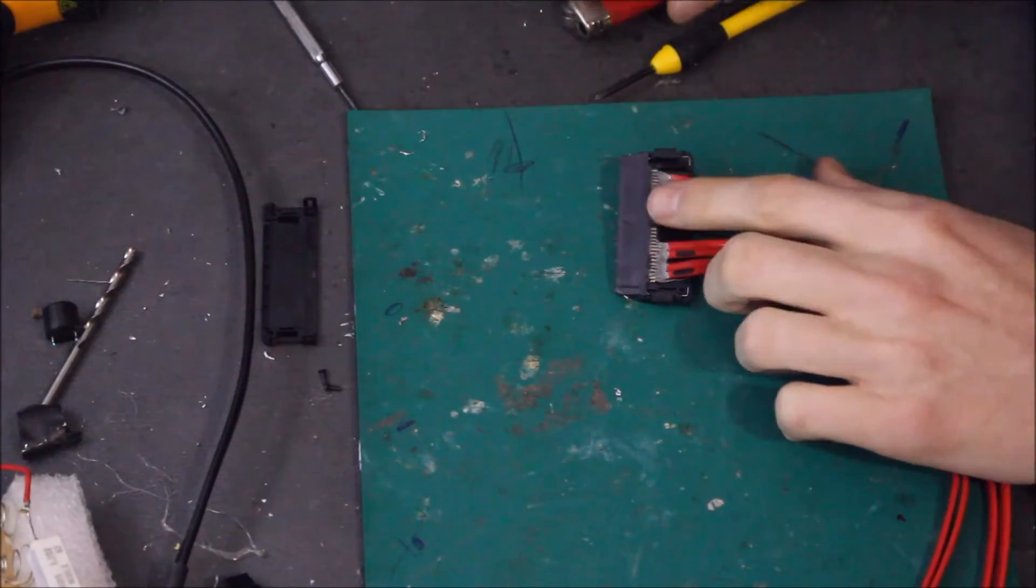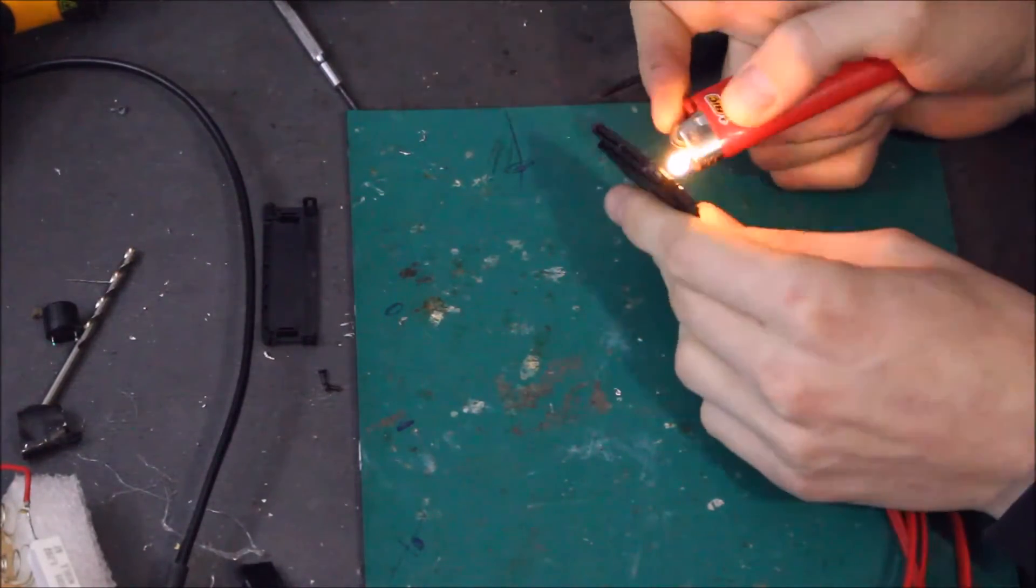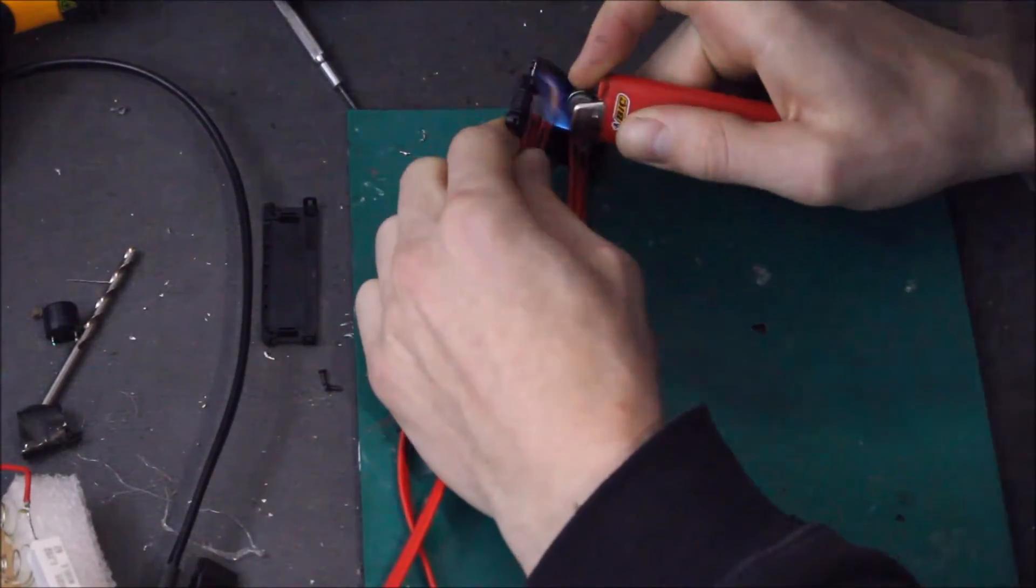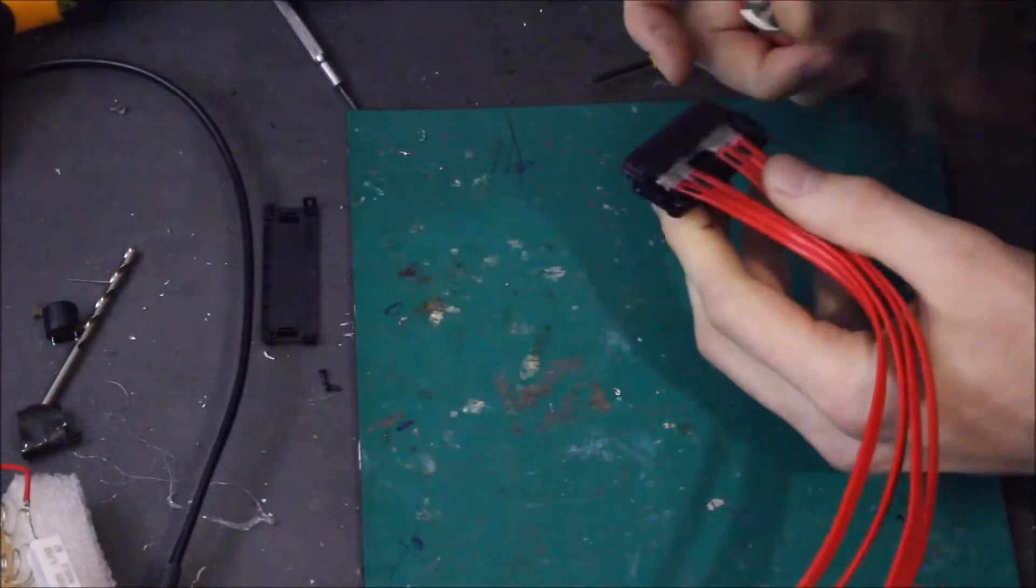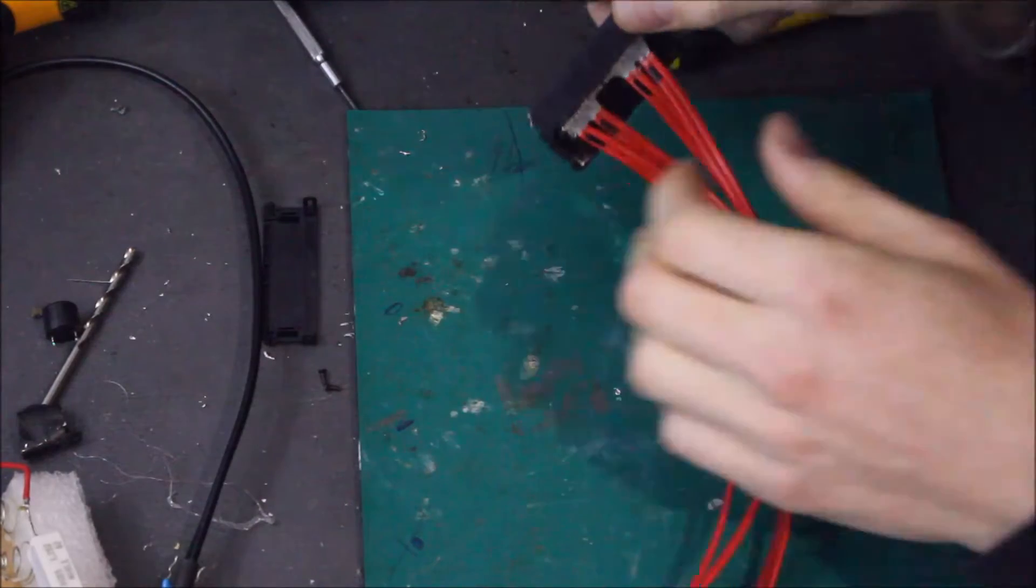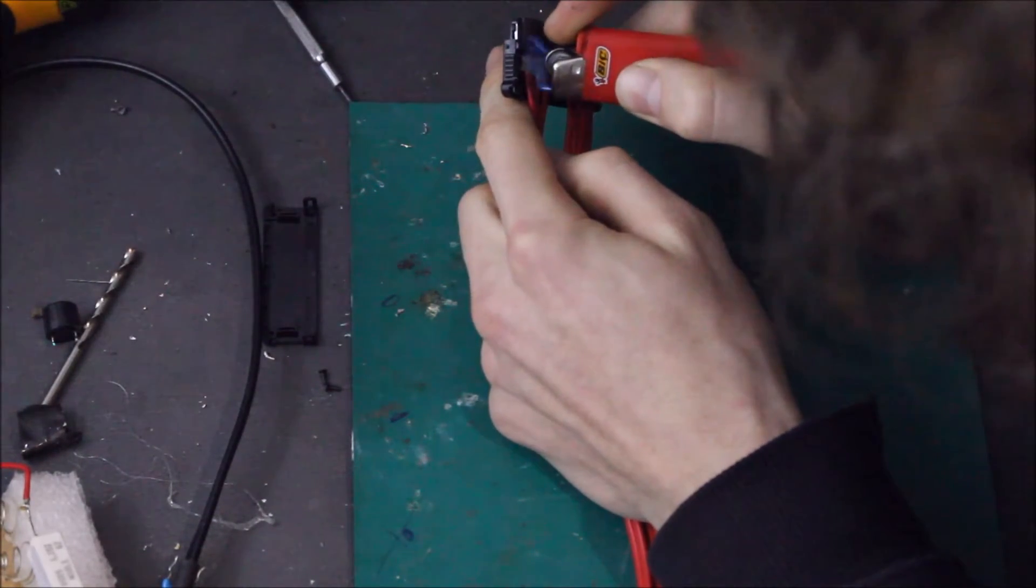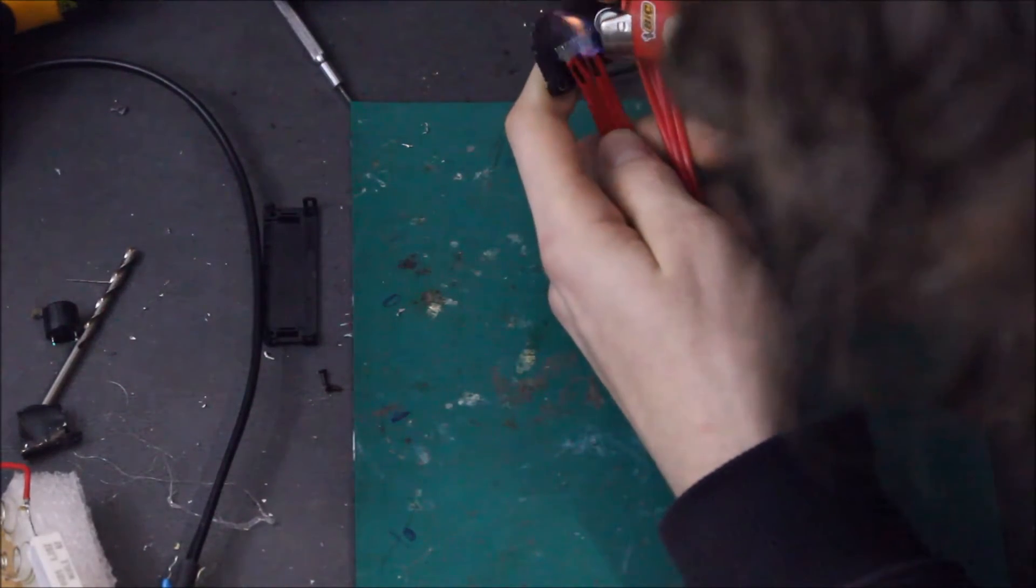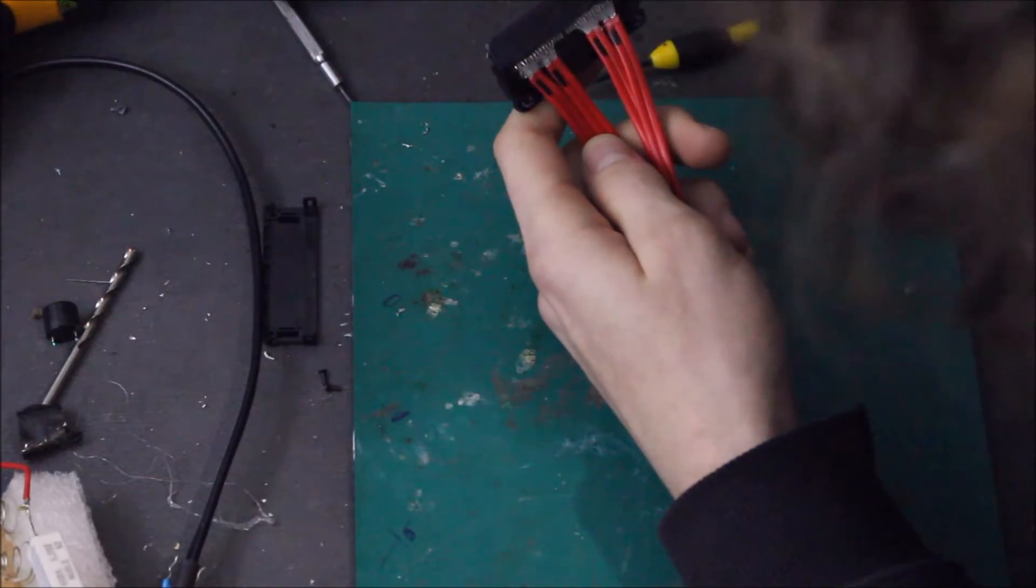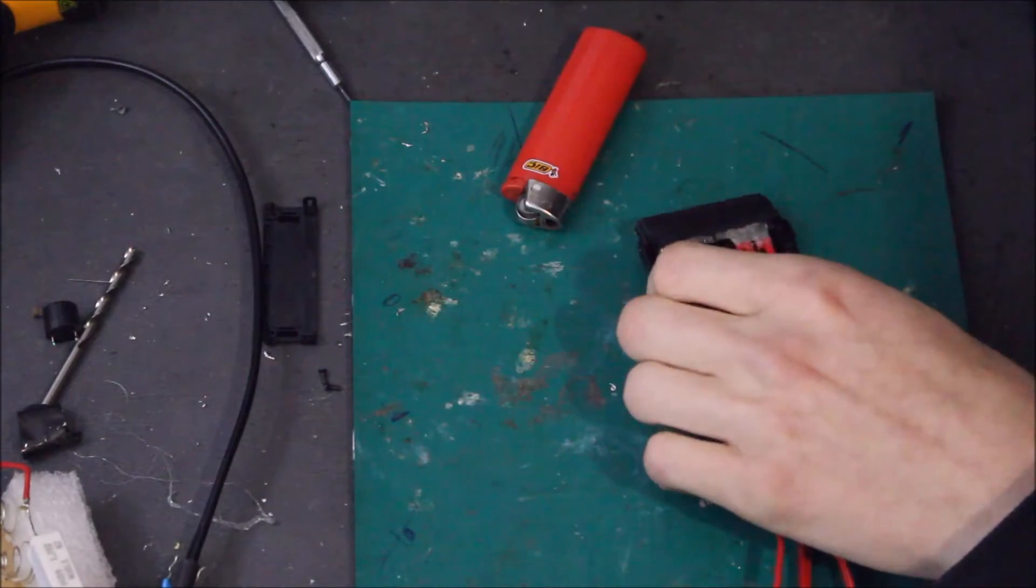Really simple. They're all hot glued down, so I am just using the lighter, and I will go through and I will heat these up. It's easy if I don't show you guys, but I'll try. So what we're trying to do is to heat the hot glue without melting everything else.